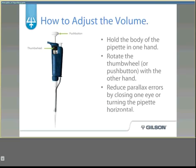You can adjust the volume with the push button and thumb wheel for newer models, or with the thumb wheel alone for older versions. Hold the body of the pipette in one hand and rotate the thumb wheel or push button with the other. To reduce parallax errors, either close one eye or turn the pipette horizontal.